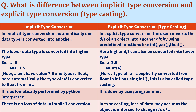In implicit type conversion, the lower data type is converted into the higher type. For example, a = 5, and if you assign a = a + 2.5, initially 'a' was an integer, but by adding a float value, the type of 'a' automatically becomes float. This is done automatically, so it is called implicit type conversion — here integer is converted into float.